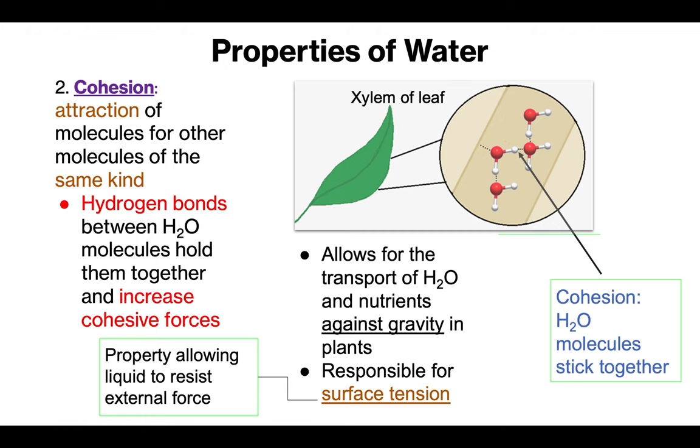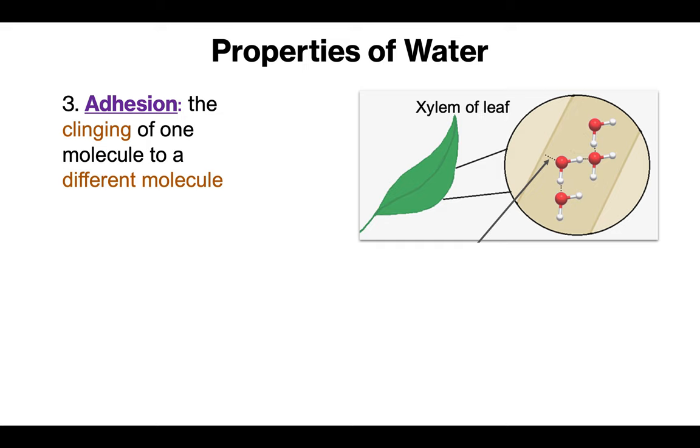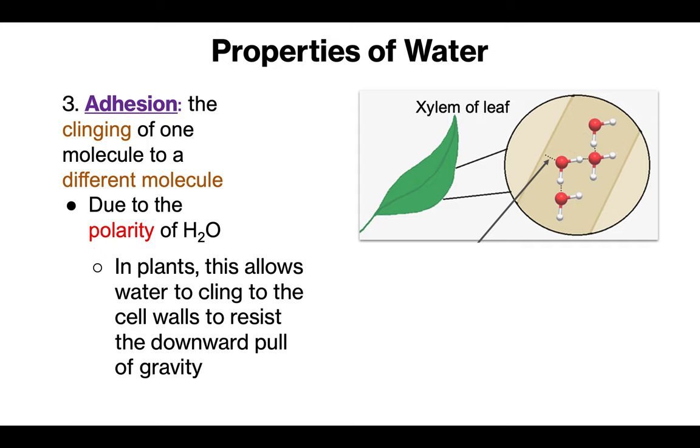Next up is adhesion or water's attraction to other molecules. So water, of course, being polar, having that positive and negative portion to it is going to be attracted to other charged things. So really anything that has a charge. And this is due to the polarity of the water, the positive and negative charge on the molecule. This is the other piece of the story of how water molecules are able to travel against gravity within plants. So here you're going to see the water molecules are attracted to the walls of those tubes. They're attracted to each other through cohesion, but they're also attracted to the walls of the tube through adhesion.